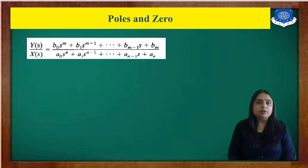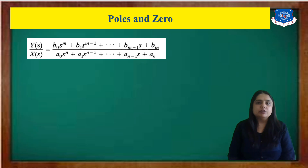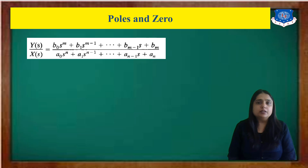The transfer function is the ratio of output upon input — more specifically, it is the ratio of the Laplace transform of the output upon the input, with all initial conditions equal to zero. So here the function is given as Y(s) upon X(s), where Y(s) is the output and X(s) is the input, and all terms are expressed in s.